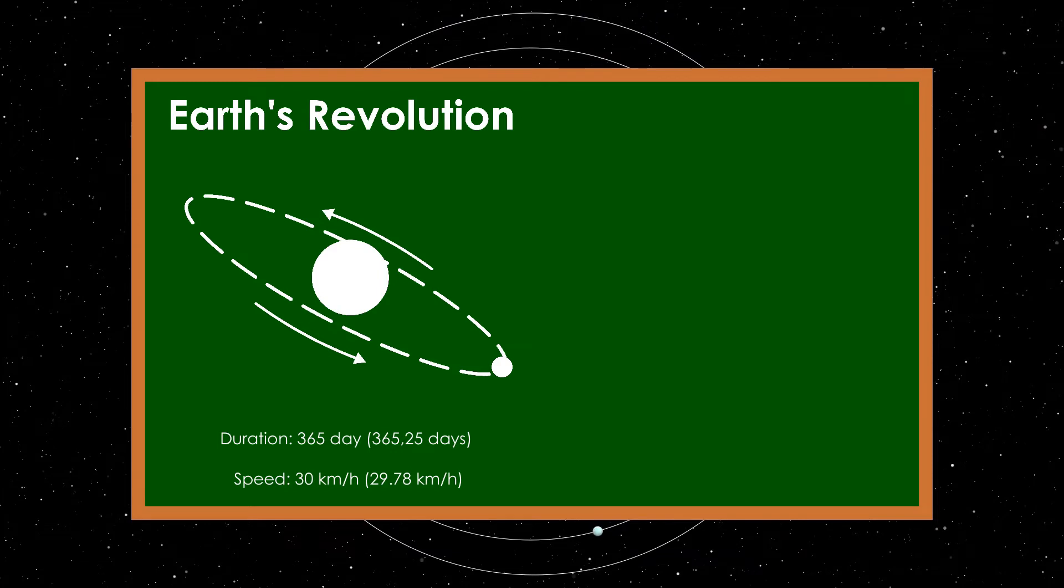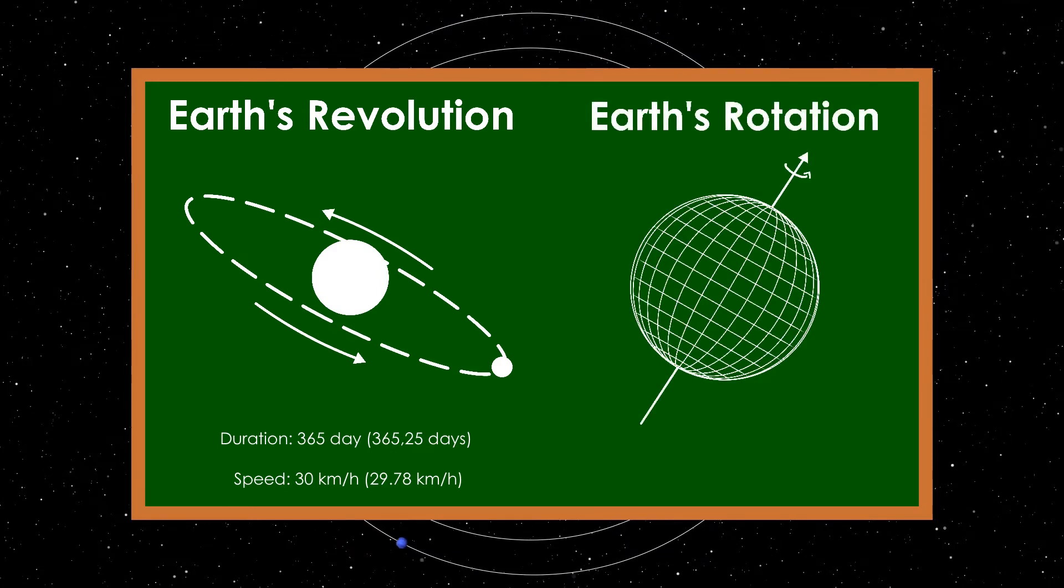The second movement of the Earth is called rotation, and it's performed by moving the Earth around its own axis in about 24 hours. The consequence of this movement is known as the change of day and night.